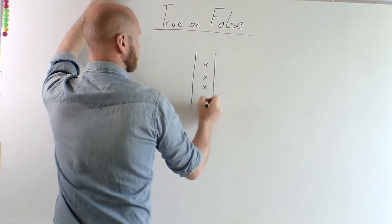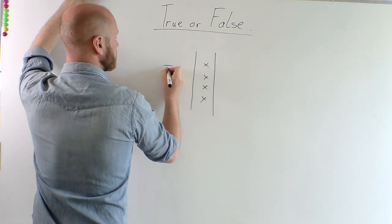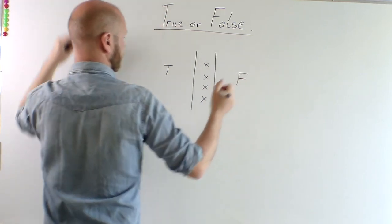You can have two, three, four, even five students. This side, T for True, F for False.